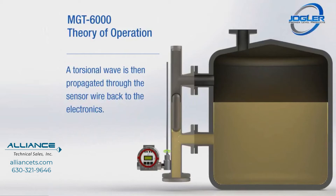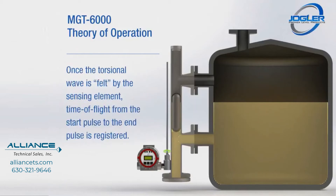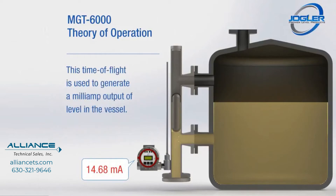Once the torsional wave is felt by the sensing element, time of flight from the start pulse to the end pulse is registered. This time of flight is used to generate a milliamp output of level in the vessel.